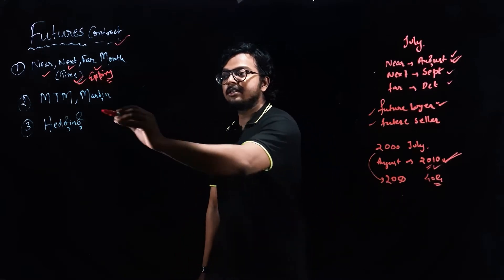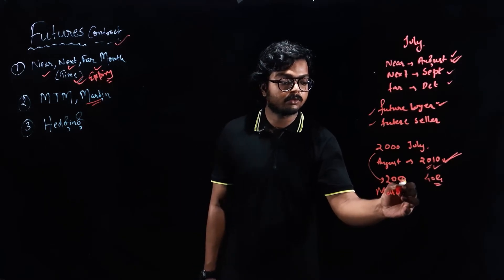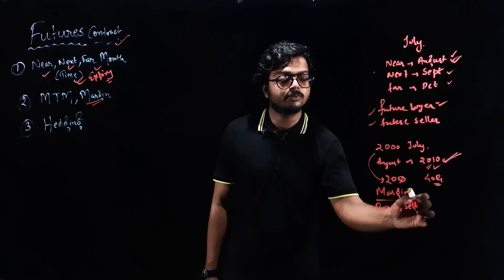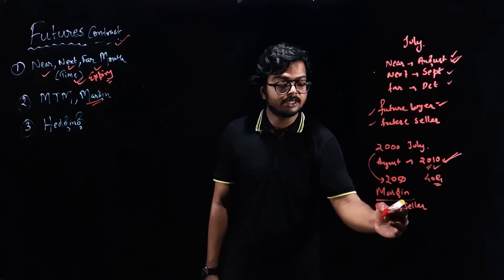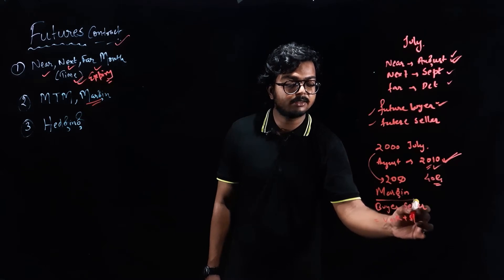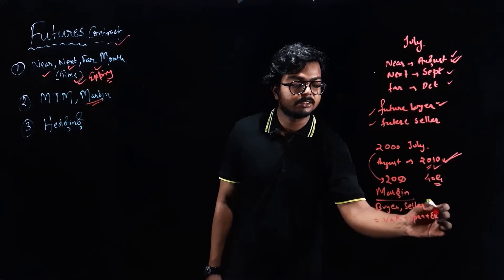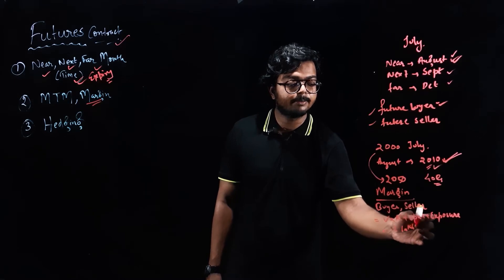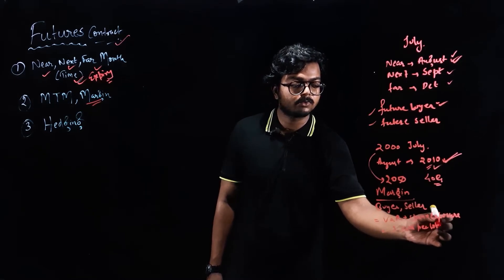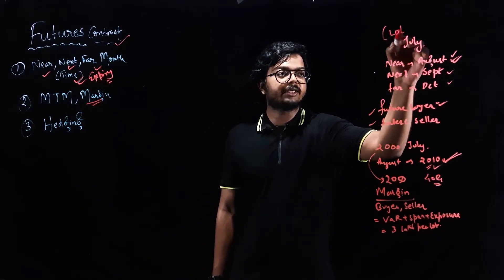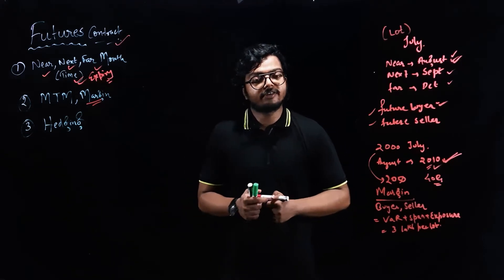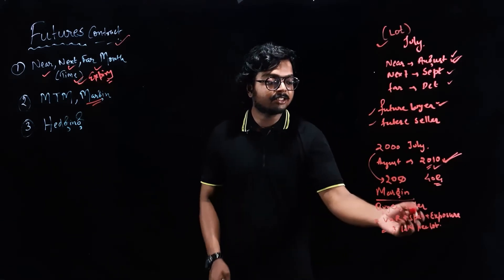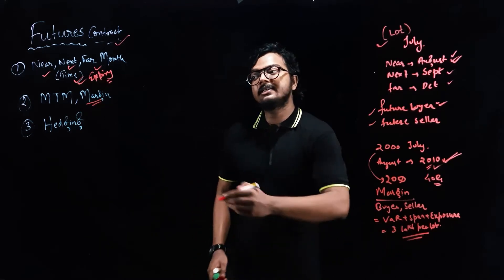Now let's see the margin requirement. For both buyer and seller, the margin would be the same — it would be the value at risk plus SPAN plus exposure. It would be around 3 lakhs per lot in general terms. In futures, you have to trade in lots; you cannot just buy one share of Reliance. You have to do it in lots, similar to options. So note that the margin required would be around 3 lakhs per lot.